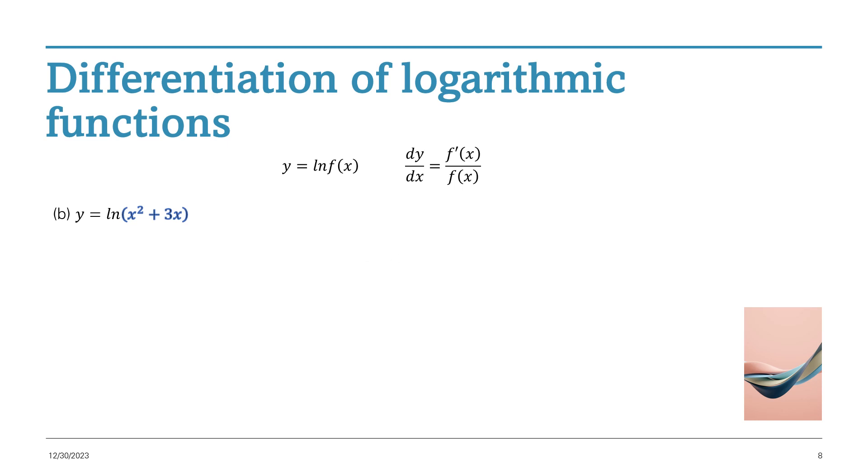So for the next one, we've got ln of x² plus 3x. So the x² plus 3x is the function part, that goes on the bottom, and its derivative on the top. So you put the x² plus 3x on the bottom, the derivative of that is 2x plus 3, it goes on the top.